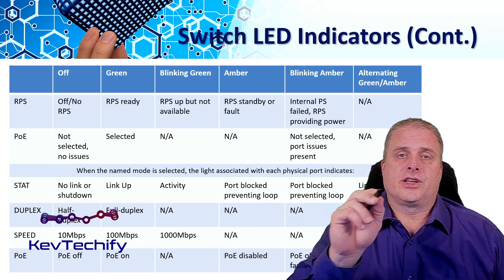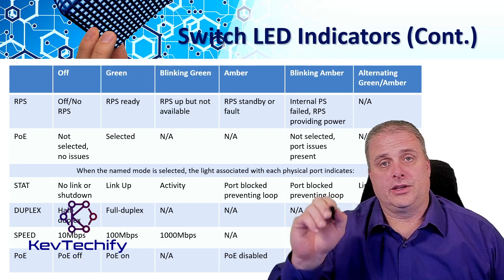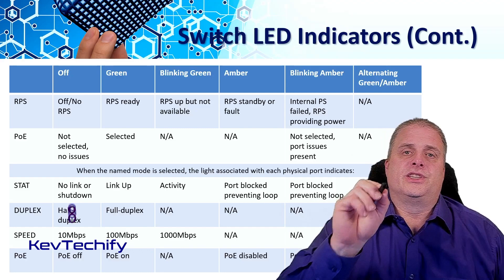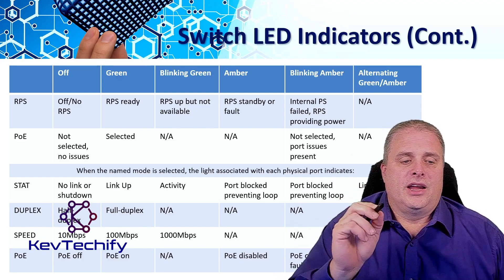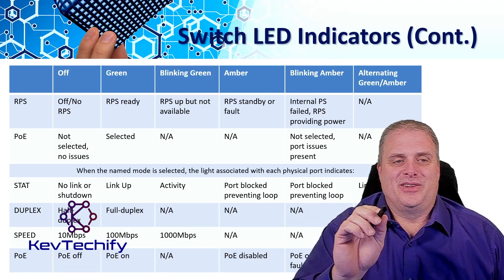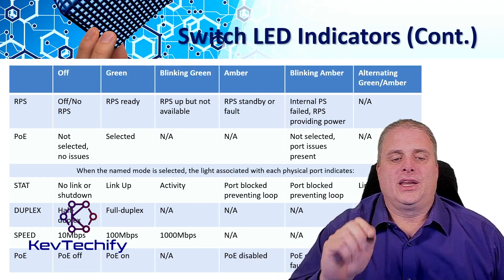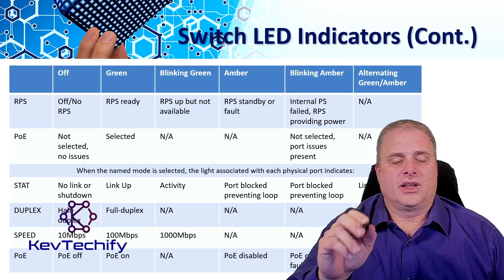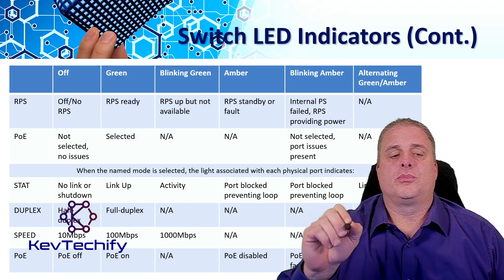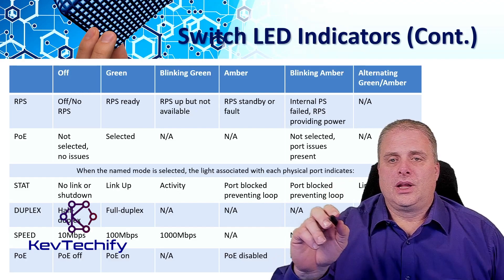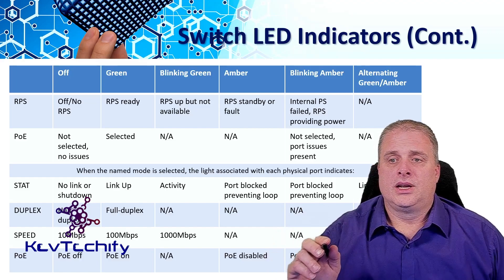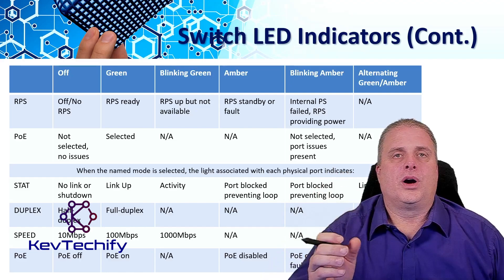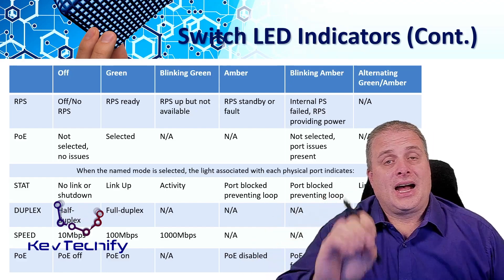For duplex, if you select duplex and look at an individual port: off means half duplex; green means full duplex. For speed: off means 10 Mbps; green means 100 Mbps; blinking green means gigabit. For PoE: if the port light is off, there's no PoE; green means PoE is on; amber means disabled or due to a fault; alternating green and amber means PoE is denied because the device is over budget — you're running too many PoE devices and the switch can't handle any more.